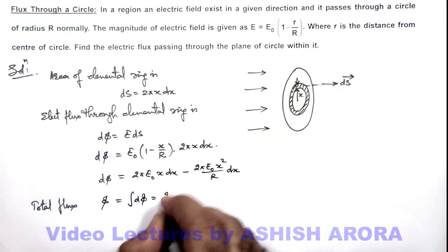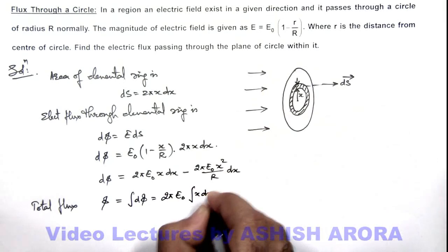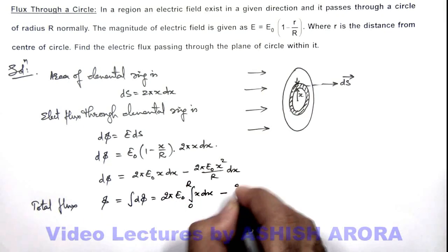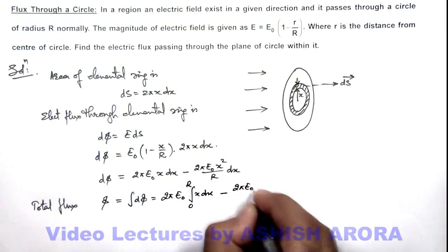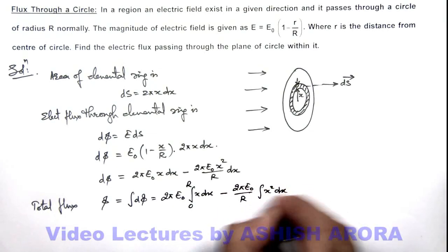Here total flux φ we can calculate by integrating dφ for this area of circle. It'll be 2πE₀ integral of x dx from zero to R minus 2πE₀/R integral of x² dx from zero to R.